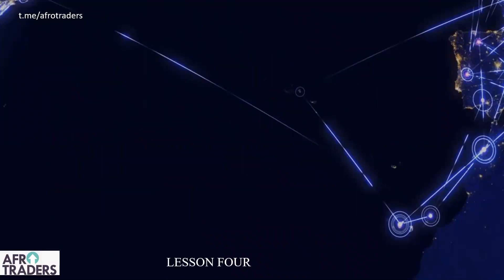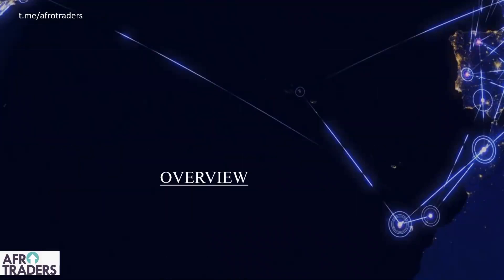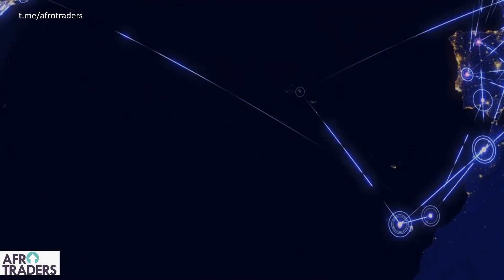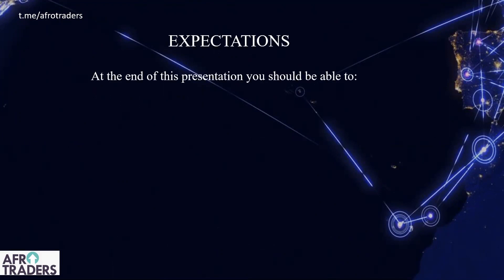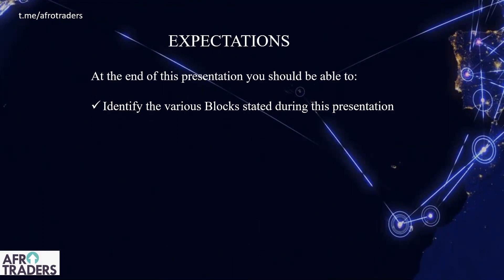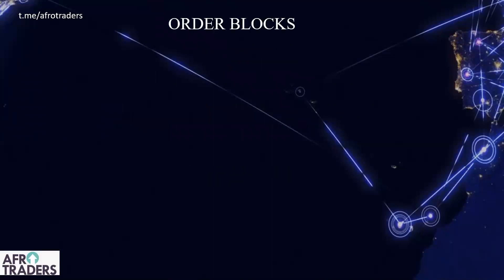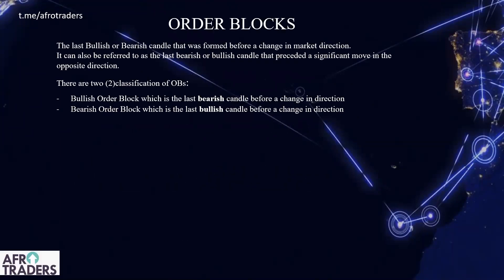This is a disclaimer. We are going to look at order blocks and breaker blocks — I won't talk about the mitigation block or rejection block. The expectation is that at the end of this presentation you should be able to identify the order blocks I'm talking about, know which ones are high probability and why they are not high probability, and then be able to trade with them.